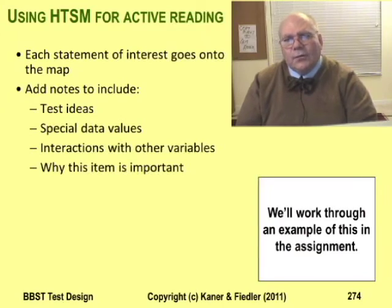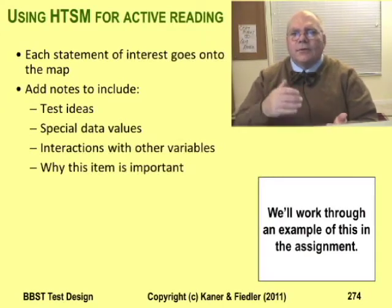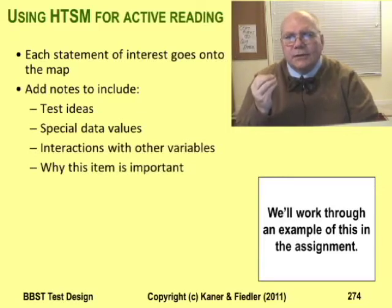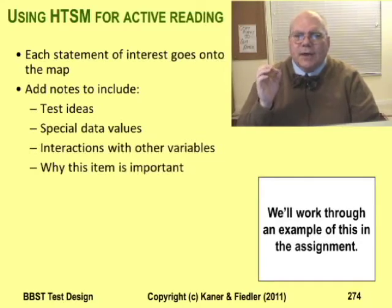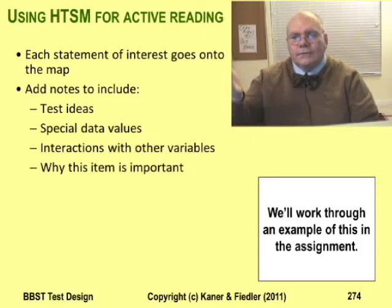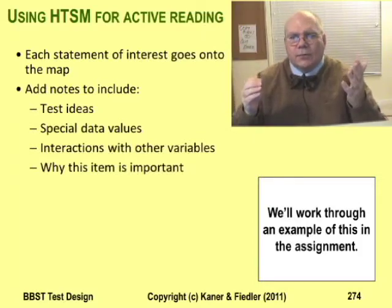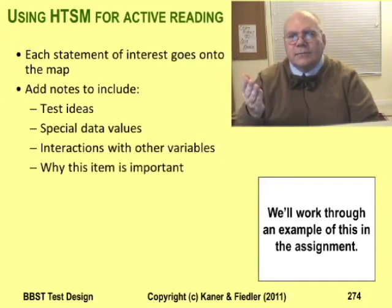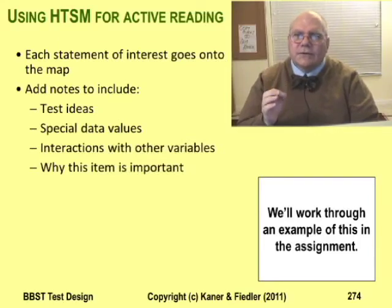So how do I use this model? I have the spec in front of me, and as I read it, I notice it's saying something about the product, the project, or the quality criteria. For example, suppose the spec says that some task has to be completed within one second — that's a performance requirement. I note that on my concept map as relevant to the performance quality, either as a comment on performance or as a new subcategory of performance. I can also make a note on the specific feature that's supposed to work this quickly — that's in the product elements group. You'll see more of how this works when you do the assignment.